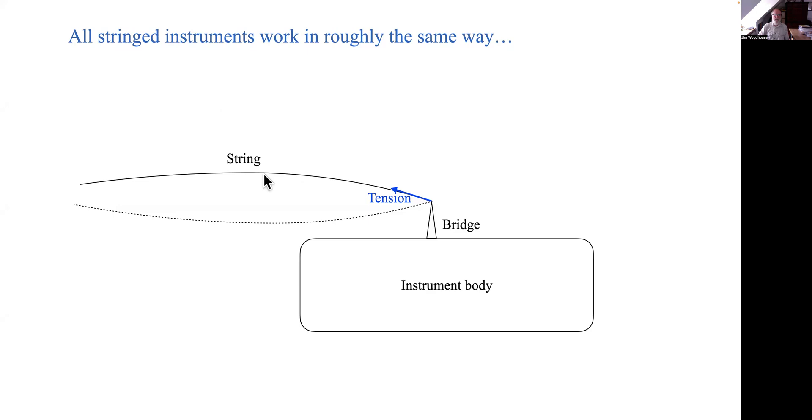The player spends all their time making the string vibrate in some particular way. The string of course is under tension, so at the bridge of the instrument as the string vibrates the tension pulls a little bit upwards and a little bit downwards in the way that I've plotted it here.